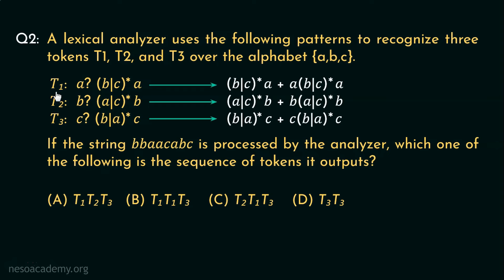In T1, A question mark means this regex portion may not follow any A symbol that is zero occurrence, or it may follow one A symbol that is one occurrence. So T1 is actually (B or C) whole star. This is the clean star closure, which means this can generate either nothing or any number of B's and C's in any sequence. And that sequence will be followed by a single A symbol.